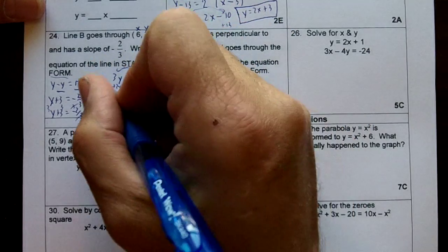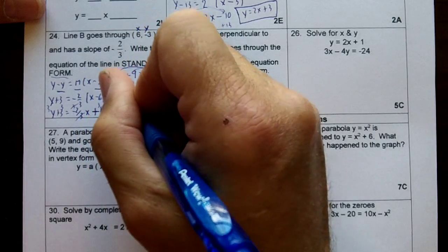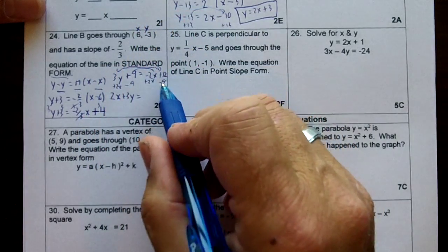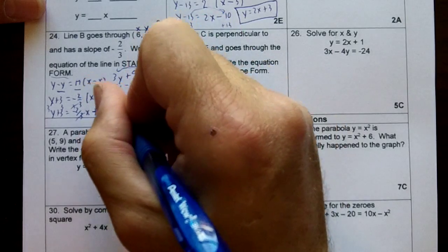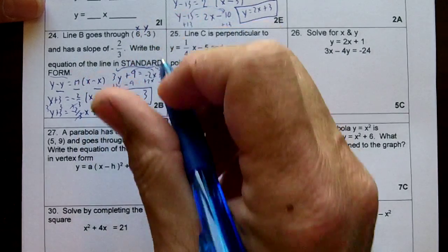So I can't combine 2x and 3y. You put the x first. 2x + 3y = 12 - 9 is 3. So that is my equation in standard form.